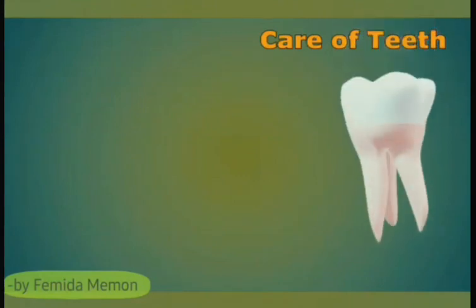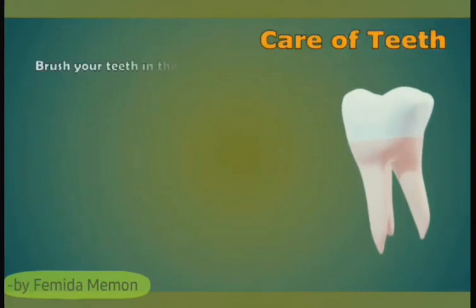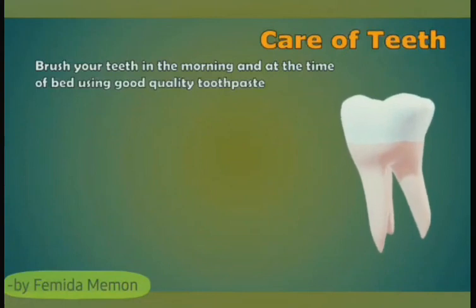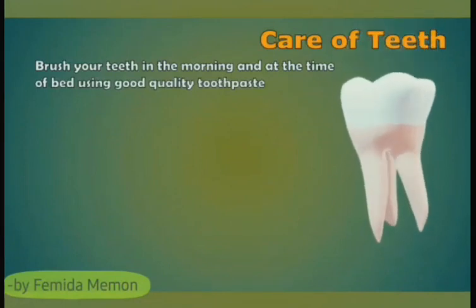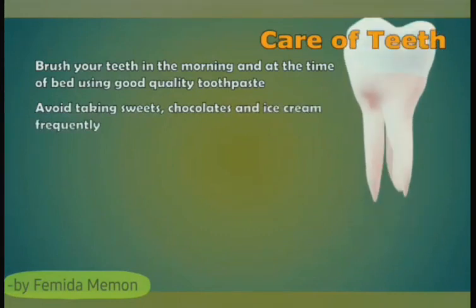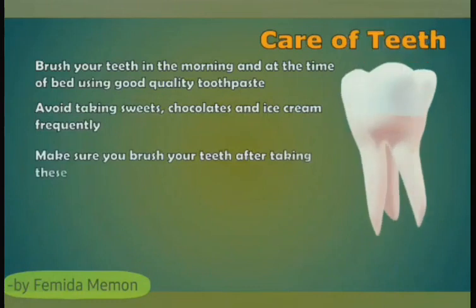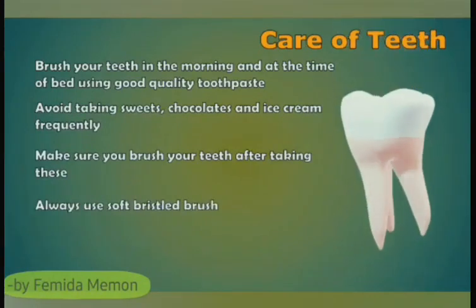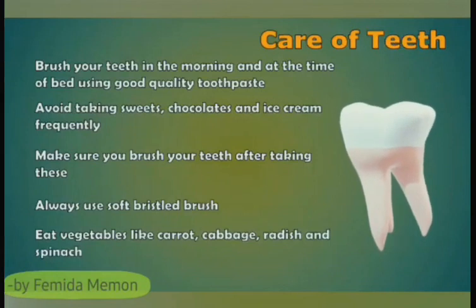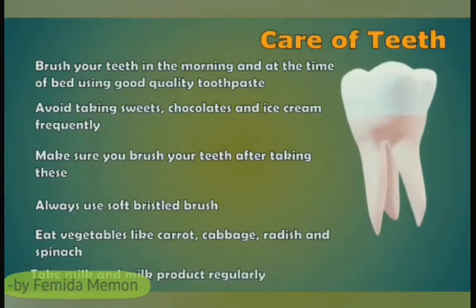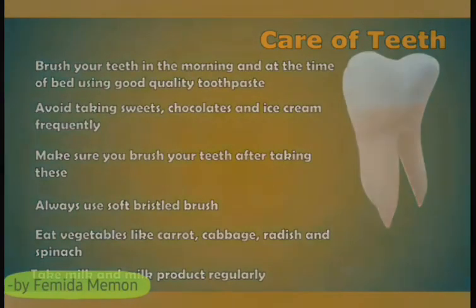These habits can help you care for your teeth and gums. 1. Brush your teeth in the morning and at bedtime using good quality toothpaste. 2. Avoid taking sweets, chocolates and ice cream frequently; make sure you brush your teeth after taking these. 3. Always use a soft-bristled brush. 4. Eat vegetables like carrot, cabbage, radish and spinach. Take milk and milk products regularly because they contain calcium which makes the teeth stronger.